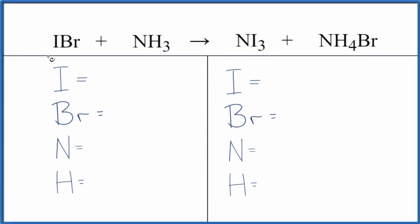Let's balance the equation for IBr plus NH3 which gives us NI3 and NH4Br. So we have iodine monobromide, this is ammonia, this is nitrogen triiodide, then we have ammonium bromide.